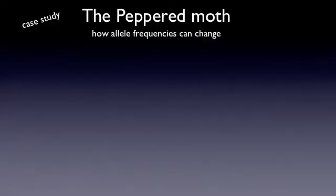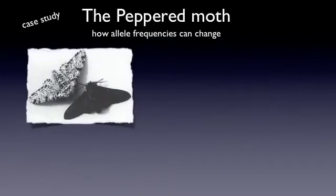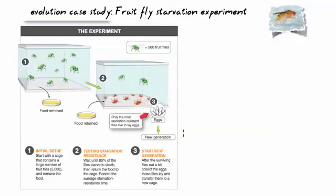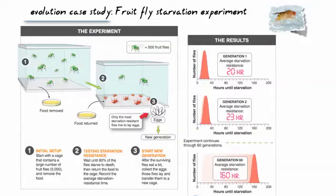Let's do a case study of how allele frequencies can change over time. The peppered moth comes in two versions: a black version and a peppered version, which is like the white one. There was a change in the environment — in England, the industrial revolution made the trees all black with soot. So the black moth, which was camouflaged, became the more dominant one when the trees turned black.